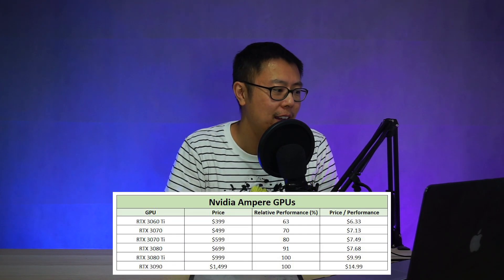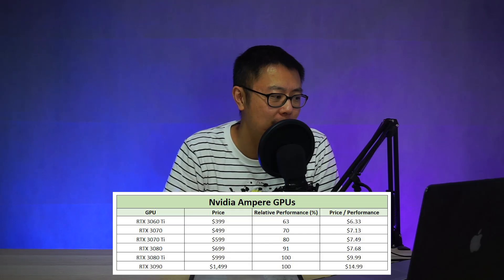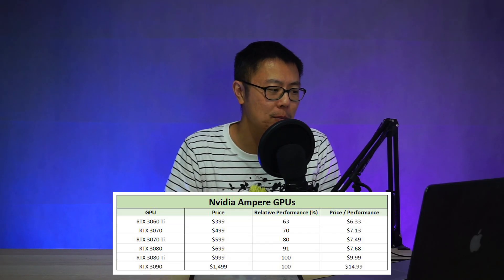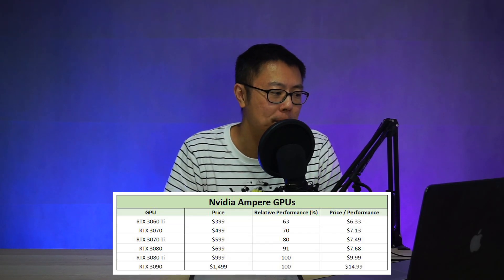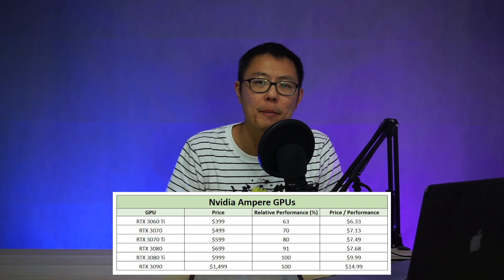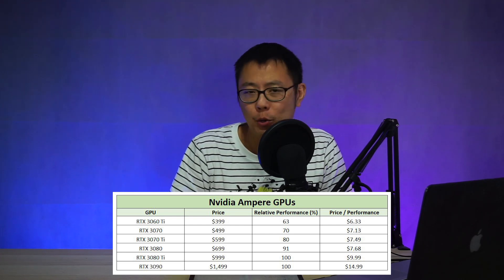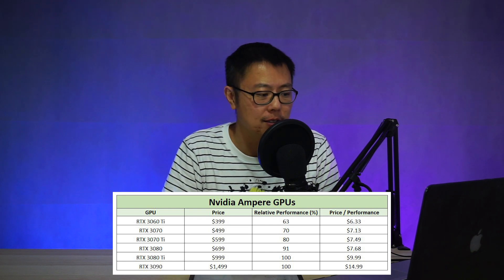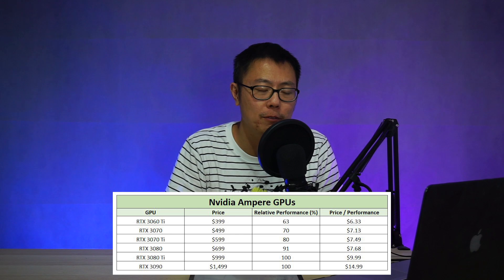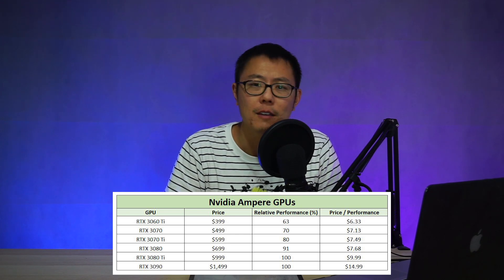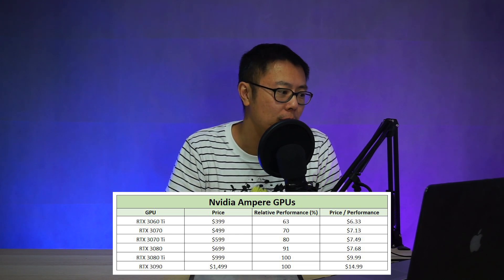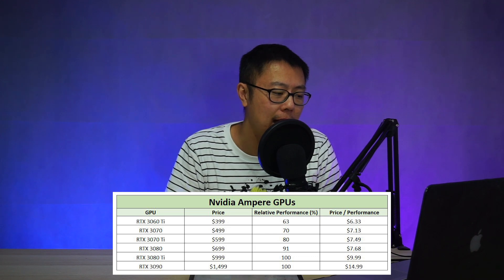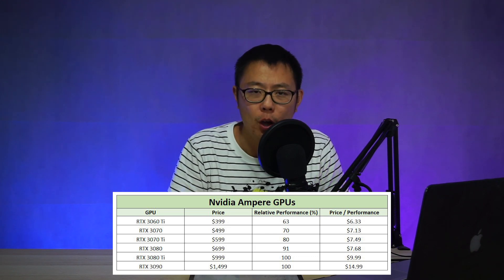For the other cards — the 3080, 3070 Ti, 3070, and 3060 Ti — performance drops about 10% each time and you drop $100 as well. You can see on the chart that they're all in the same ballpark in terms of price-to-performance ratio. So if you want the best value, you really want to get one of these cards from the 3080 on down.